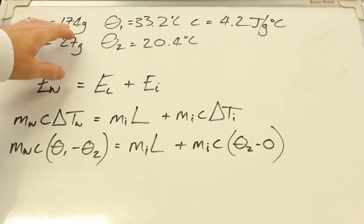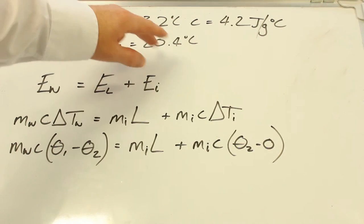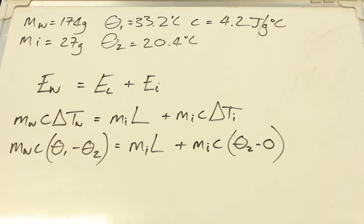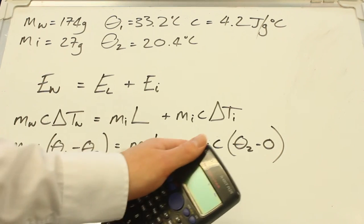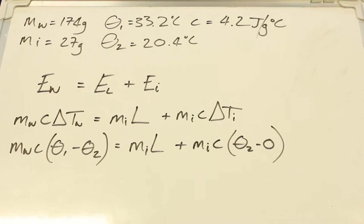Mass of the water initially 174 grams, mass of the ice 27 grams, temperature of the water initially 33.2, temperature of the ice 20.4, and specific heat capacity of water 4.2. So I'm just going to use those to kind of simplify this term here, then that term, then that term and then rearrange and we can figure out L.